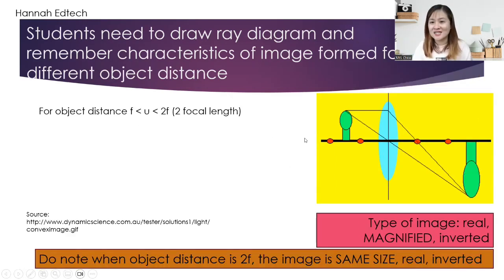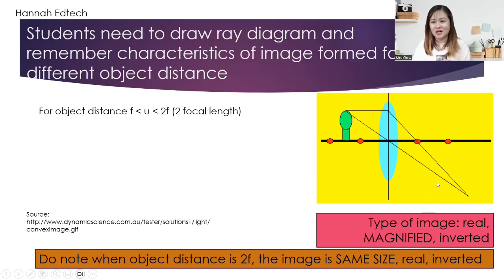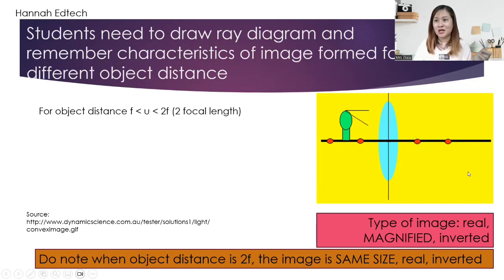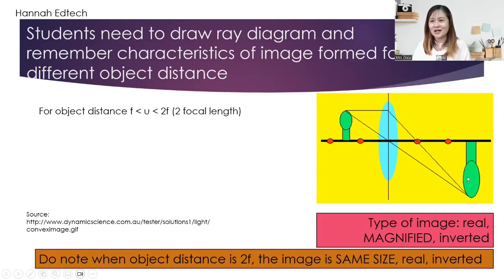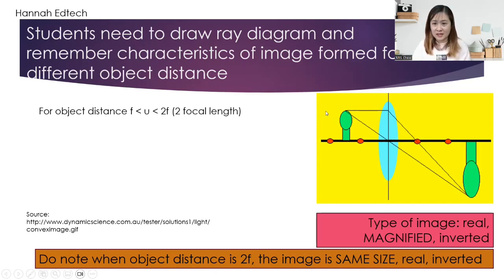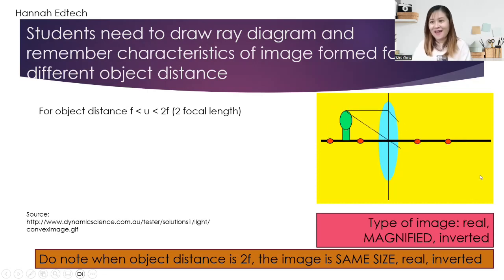For object distance within two focal lengths to one focal length, you will still have a real image on the lens side. However, it is no longer diminished but magnified. It is still inverted and still real — it changes from a diminished image to a magnified image. We usually use this in a light projector. When the object distance is exactly at 2F, the image is the same size, real, and inverted.